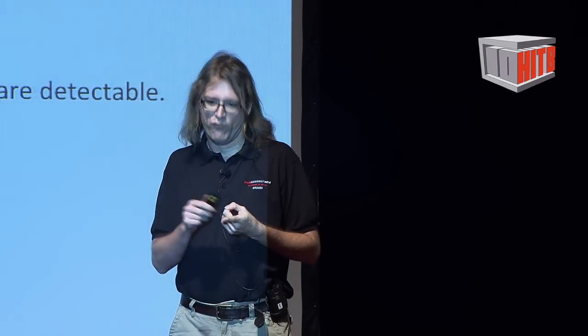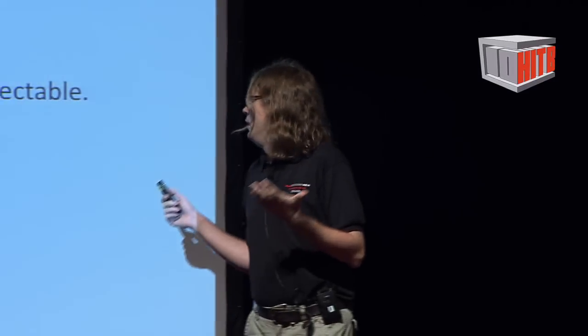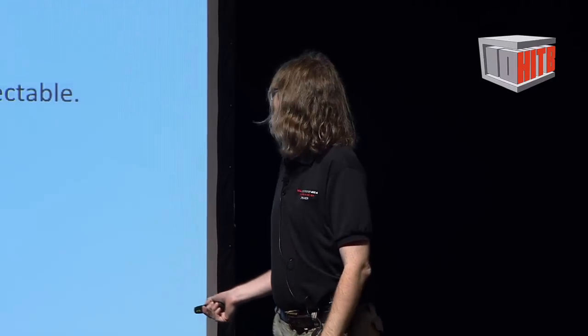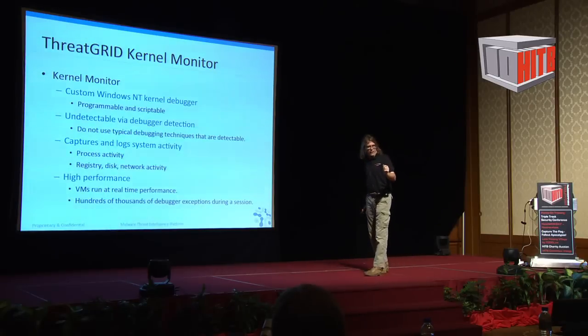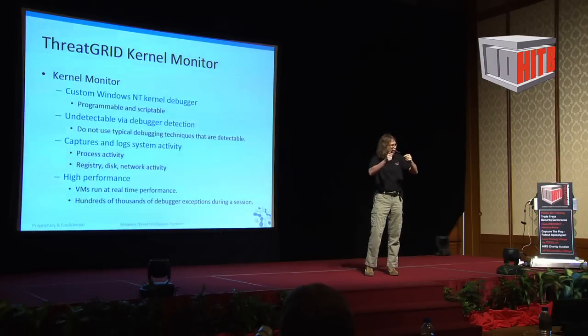Our kernel monitor captures all process activity: files opened, network connections, registry keys created, processes started — all of that. And more importantly, our kernel monitor is fast enough to run in real time within one second of compute time. We have hundreds of thousands of debugger traps that happen during one session. Every time there's a debugger trap, you stop execution, investigate memory, look at functions called, unwind the stack, log it, and then hit go. To do that hundreds of thousands of times in real time requires a very high-performance kernel monitor.